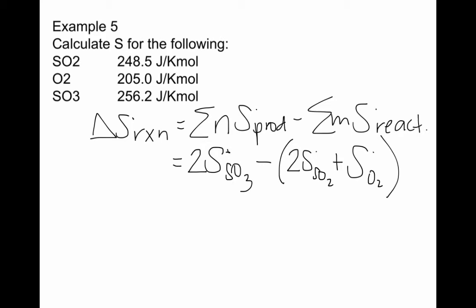Because oxygen doesn't have a coefficient. So this is what we have with just variables, and now we can plug in our values. So 2 times 256.2, which is SO3, minus 2 times 248.5 plus 205 from the oxygen.